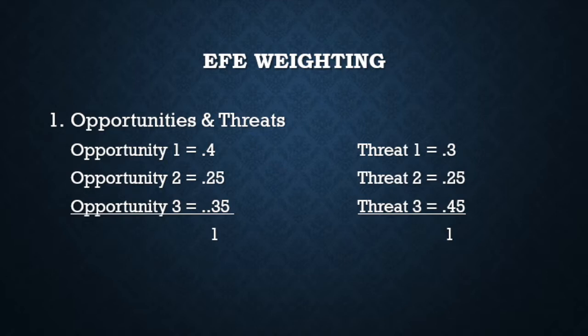After the factors have been narrowed down, they must be applied an initial weight. This weight is an analysis of how well the company is currently taking advantage of the opportunity or threat in comparison to the others. When assigning a weight, each opportunity or threat is assigned a number between 0 and 1, with the sum for both opportunities and threats equal to 1. The current weights are based on how well the company is currently handling an opportunity or threat, and therefore the weights of each factor may not be equal to one another.